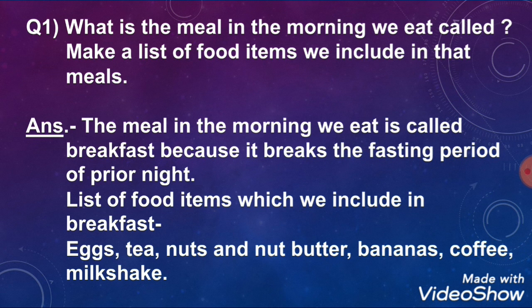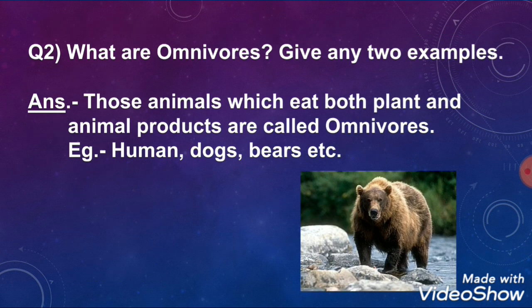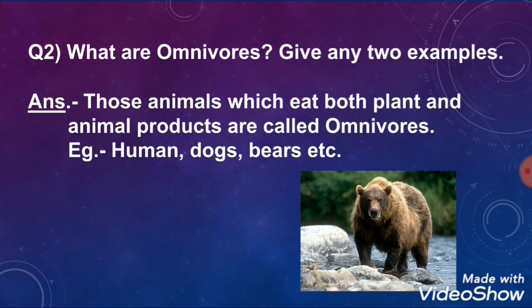Now we are coming to the next question. On the display you can see: omnivores. Omnivores are those who eat both plant products and animal products. The main examples are human beings, dogs, and many others.